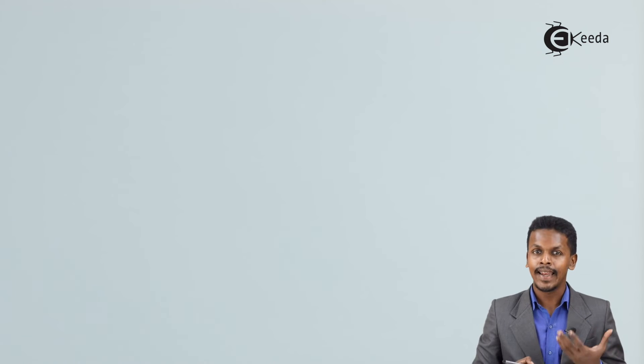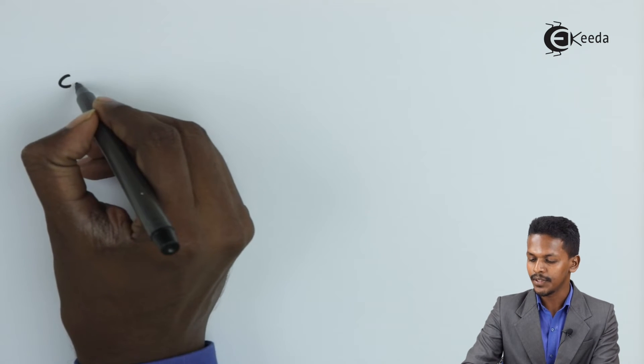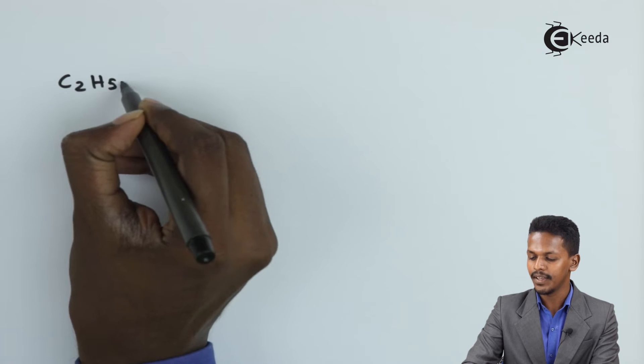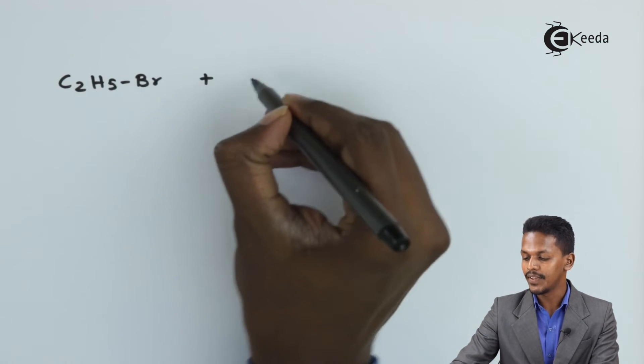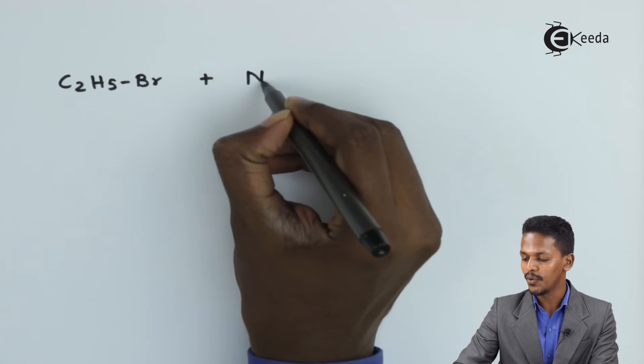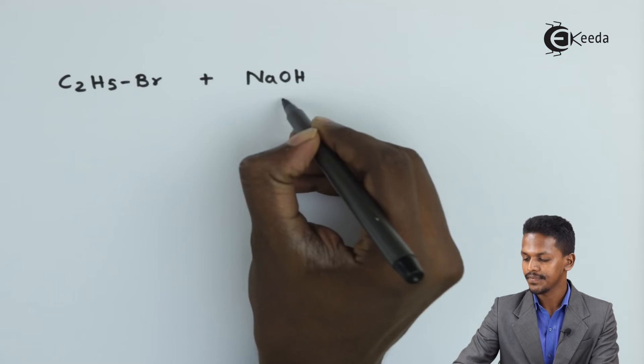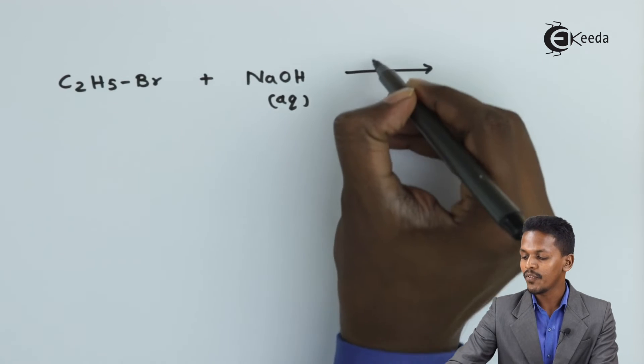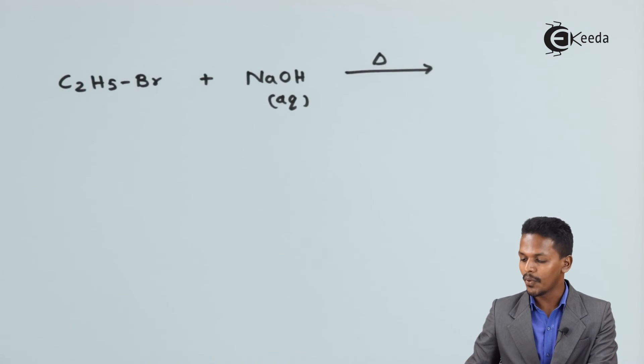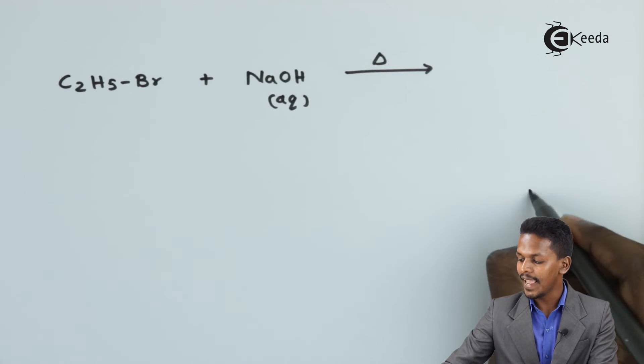Suppose we are considering an example. If we are using C2H5Br, that is ethyl bromide, and we are treating it with aqueous solution of NaOH - this is a dilute one - and by providing heat, then we find that NaBr has been removed as a byproduct.